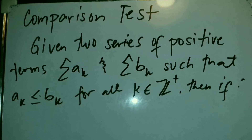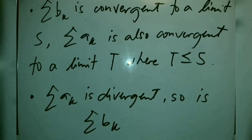Then if summation b_k is convergent to a limit S, summation a_k is also convergent to a limit T where T ≤ S. And if summation a_k is divergent, so is summation b_k.